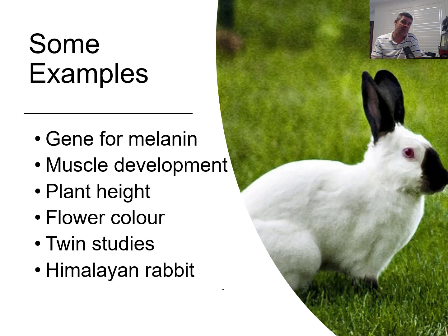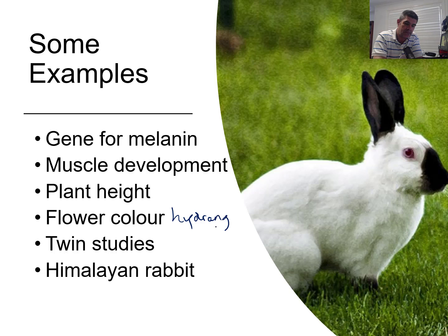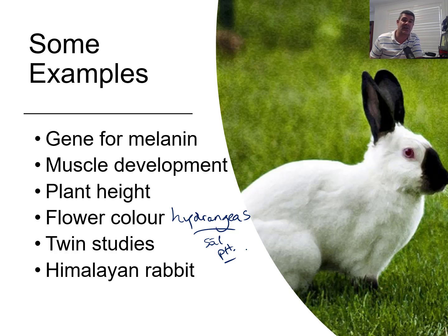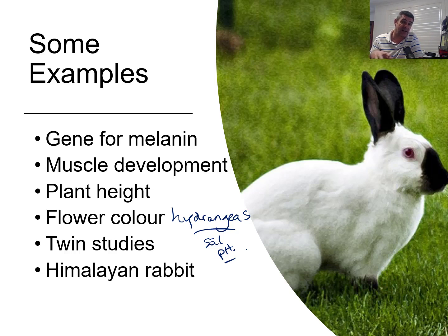Plants may have genes for certain heights, but if they don't get enough water or the soil quality is poor, they may not grow. One interesting example is hydrangeas, which are affected by soil pH — kind of like litmus but in reverse. Hydrangeas tend to produce blue flowers in acidic soil and more pinkish-purple flowers in basic soil. You can actually change the colour of hydrangeas by changing the soil pH, though doing it too much can stop them from growing altogether.